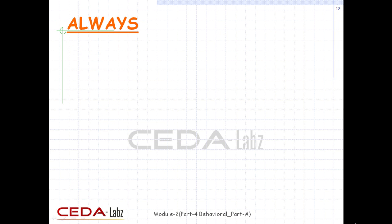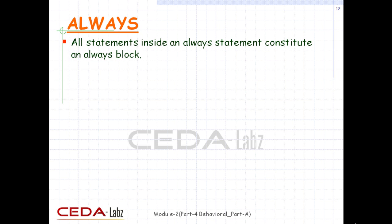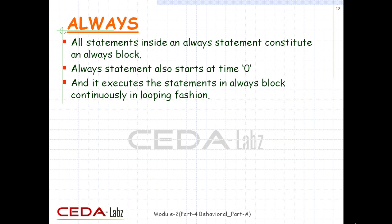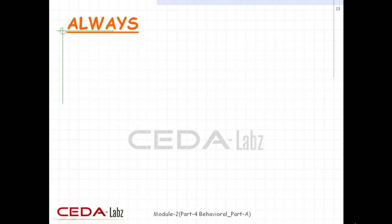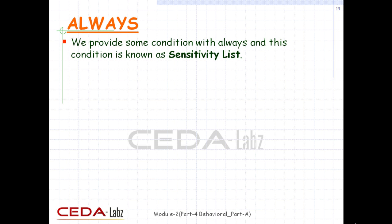Next is the always structured procedure statement. All behavioral statements inside an always statement constitute an always block. The always statement starts at time zero and executes the statements in the always block continuously in a looping fashion. This statement is used to model a block of activity that is repeated continuously in a digital circuit. To control the looping of the always block, we provide a condition with always called the sensitivity list. Always is followed by the symbol '@' and then the sensitivity list is provided.